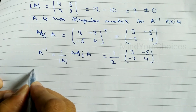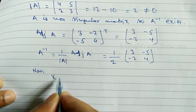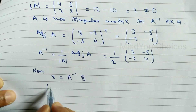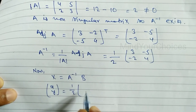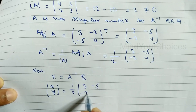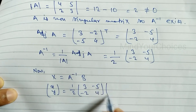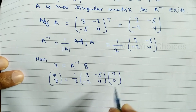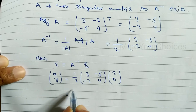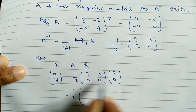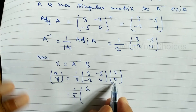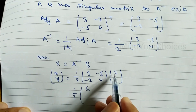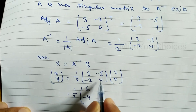Finally, we find X = A inverse × B. So [x, y] = (1/2) × [[3, −5], [−2, 4]] × [2, 0]. Multiplying: 3×2 + (−5)×0 = 6, and (−2)×2 + 4×0 = −4. So we get (1/2) × [6, −4].